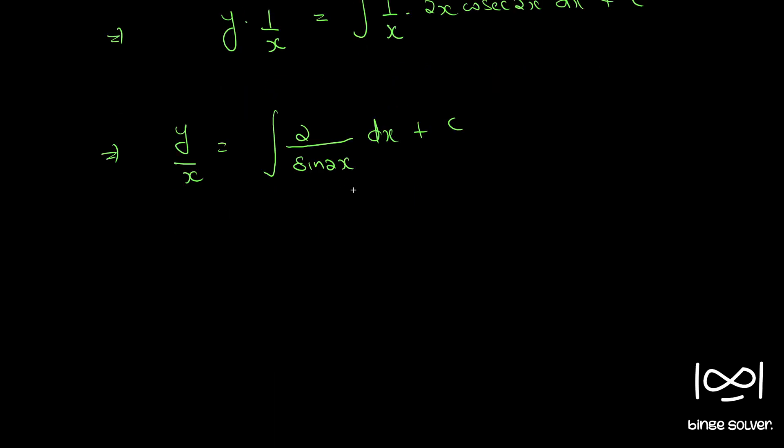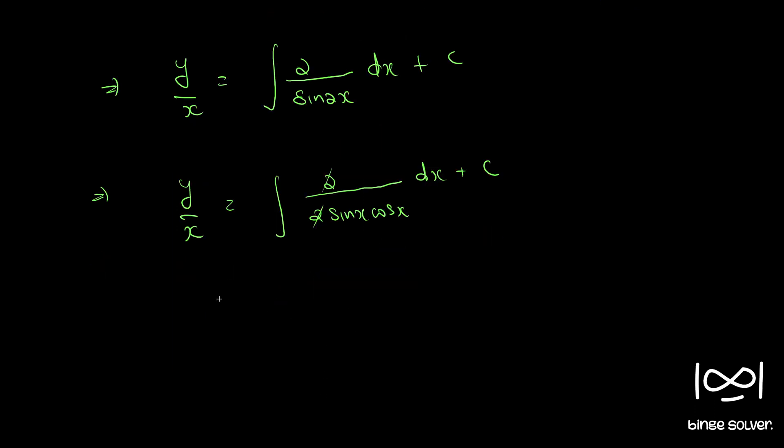Now if you apply the formula for sine 2x we have y by x is equal to integral 2 by 2 sine x cosine x dx plus c. Now if you divide the numerator and denominator by cosine square x we have y by x is equal to integral secant square x by tan x dx plus c.